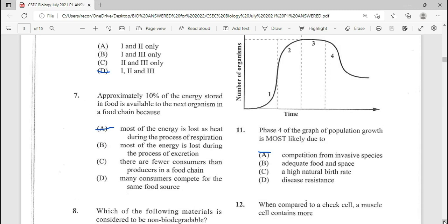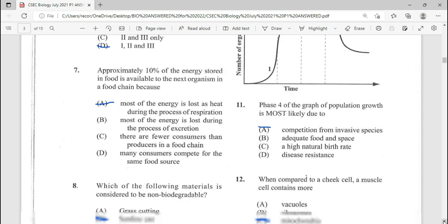Number seven, approximately 10% of the energy stored in food is available to the next organism in a food chain because A is your answer there.